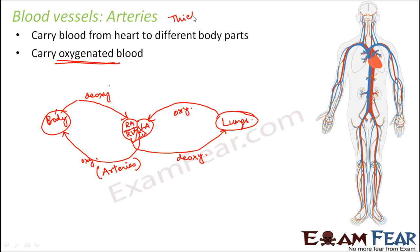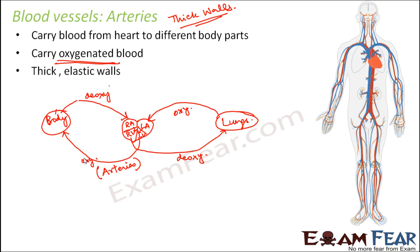Arteries have thick walls, which is extremely important. Had they not had thick walls, they would not be able to manage such high pressure. When blood comes out with very high pressure, it reaches the capillaries, whose walls are very thin, causing blood to tend to leak out. But in case of arteries, since the walls are very thick, they can manage blood flowing through them under very high pressure. They have thick elastic walls, which makes them very useful.